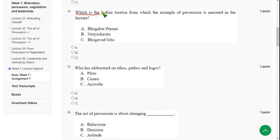So fourth question. Which is the Indian treatise from which the example of persuasion is narrated in the lecture. So for fourth question the correct answer is option C, Bhagavad Gita. So from Bhagavad Gita it is mentioned in the example in the lectures.